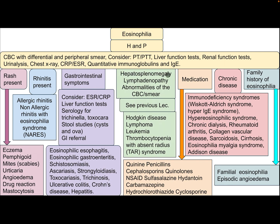If there is hepatosplenomegaly, lymphadenopathy, or abnormality of the complete blood count or smear, see the previous lecture on these diseases. Differential diagnosis includes Hodgkin disease, lymphoma, leukemia, and thrombocytopenia with absent radii syndrome.